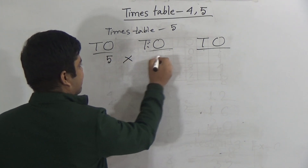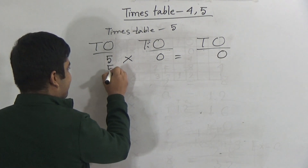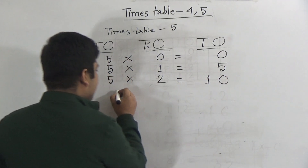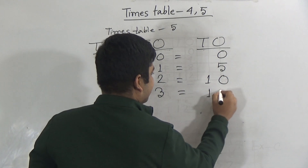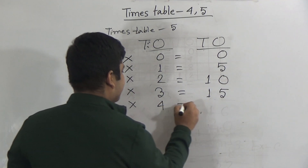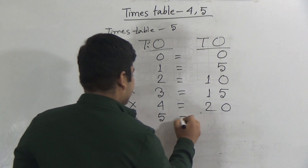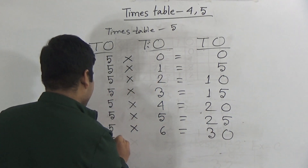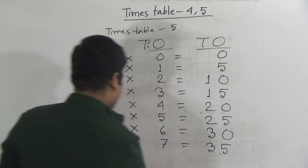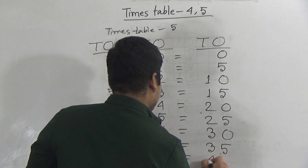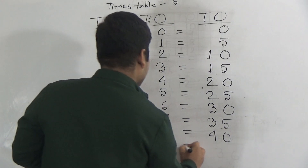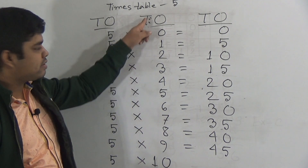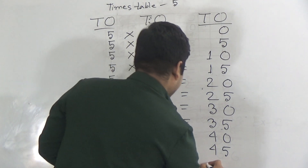Now we shall start to write times table 5. 5 multiply 0 — 5 zeros are 0. 5 multiply 1 — 5 ones are 5. 5 multiply 2 — 5 twos are 10. 5 multiply 3 — 5 threes are 15. 5 multiply 4 — 5 fours are 20. 5 multiply 5 — 5 fives are 25. 5 multiply 6 — 5 sixes are 30. 5 multiply 7 — 5 sevens are 35. 5 multiply 8 — 5 eights are 40. 5 multiply 9 — 5 nines are 45. 5 multiply 10 — we write 1 in tens place and 0 in ones place. So 5 tens are 50.